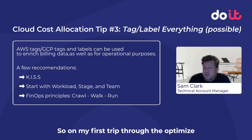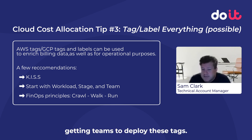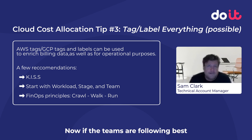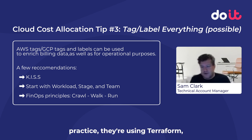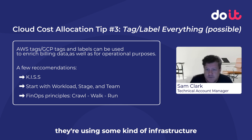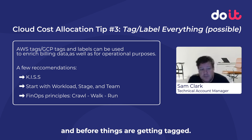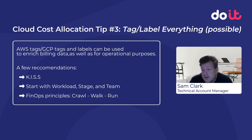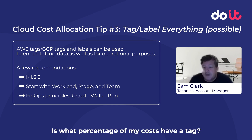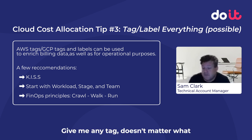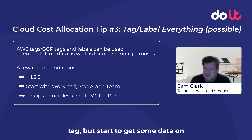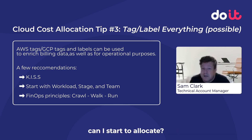On my first trip through the optimize phase, I'm going to try to start getting teams to deploy these tags. Now, if teams are following best practice — they're using Terraform or some kind of infrastructure as code — that's going to take a while before they've updated all their code and things are getting tagged. So I'll put in a KPI for my operate phase: what percentage of my costs have a tag? Give me any tag, doesn't matter what tag, but start to get some data on what I have tagged and what I haven't — how much of my spend can I start to allocate?